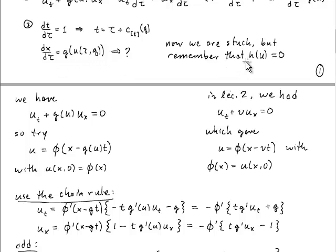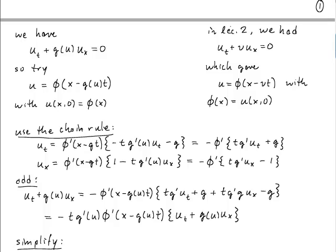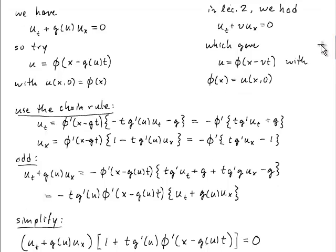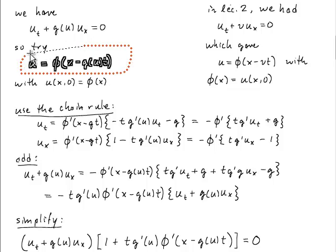But because of the special case where h of u is equal to 0 in this problem, we can look and take some inspiration from our answer back when we did this for linear first order partial differential equations. There we had u_t plus some constant velocity times u_x, and we found that the solutions were u is some function of x minus vt, right? So this function phi is something that we get from the initial conditions. Okay, so recognizing that v and g of u are analogous quantities in this problem, we're going to see whether this kind of solution could actually work in this problem.